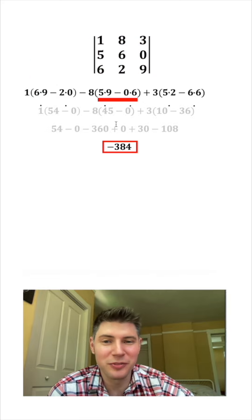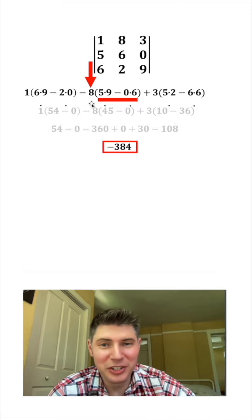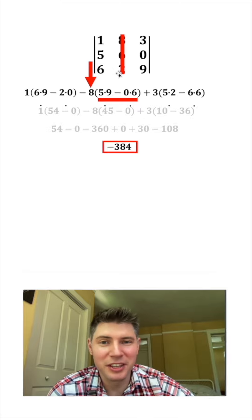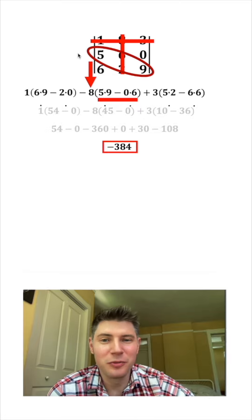And then you repeat the same thing here. How do you find this stuff? This has the eight coefficient. You find the eight up here, you get rid of that column and that row, and then you do five times nine minus zero times six.